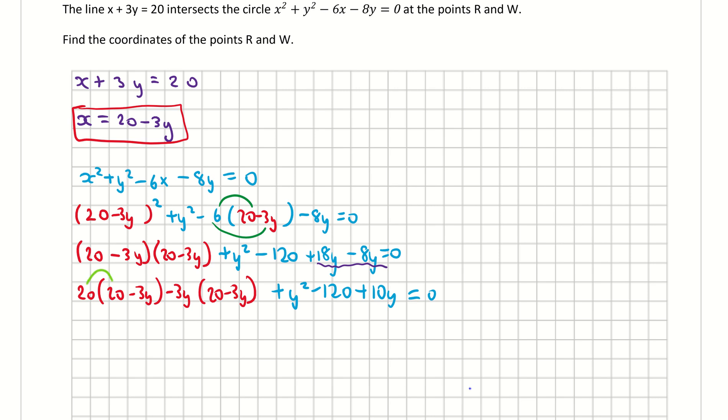Coming back to the start, I have 20 times 20, which is 400. 20 times minus 3y gives me minus 60y. From the second bracket, minus 3y by 20 is again minus 60y, and minus 3y by minus 3y gives me positive 9y². Don't forget to put back in your y² minus 120 plus 10y = 0.